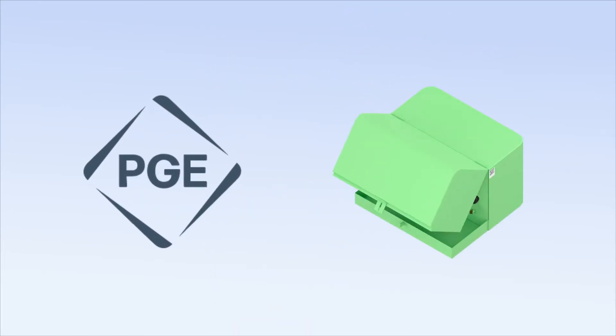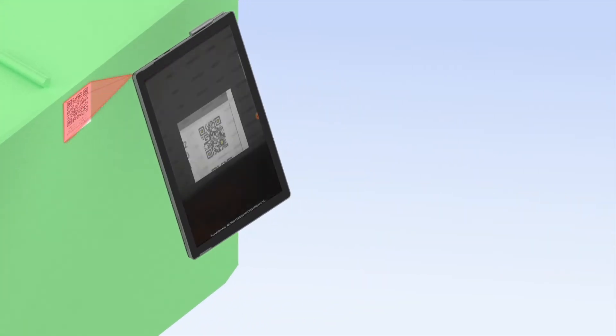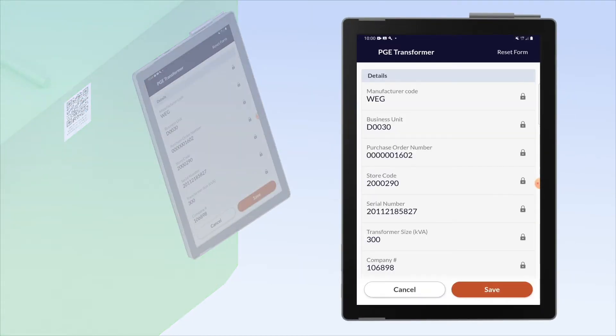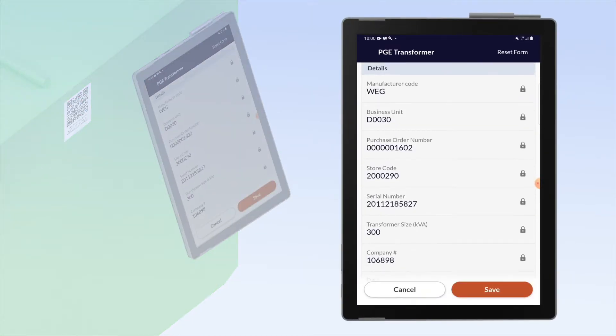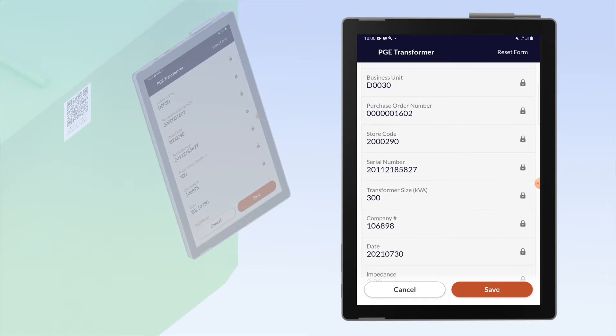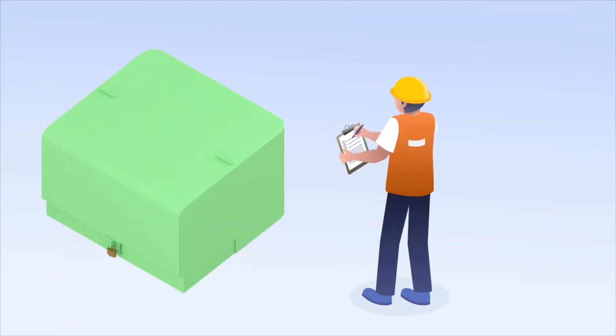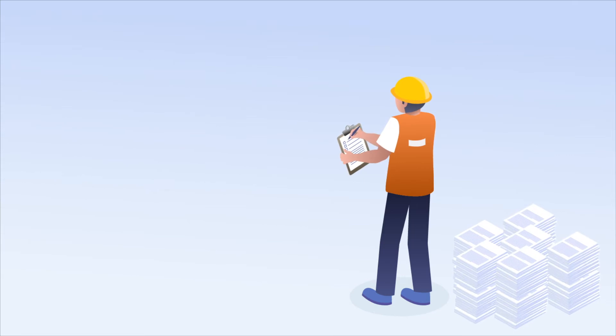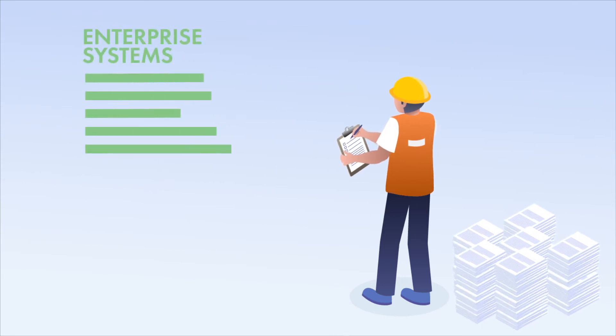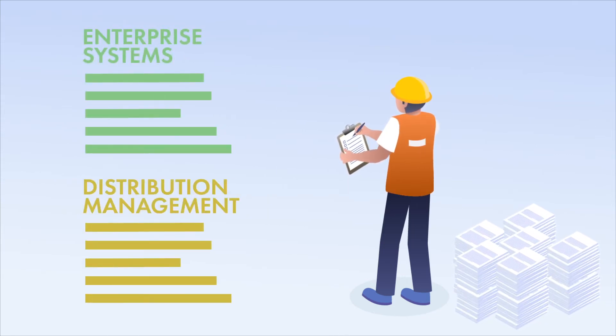At Portland General Electric, a demonstration was conducted to illustrate both the benefits and limitations of barcoding-based as-building of transformers. All electric utilities aim for accurate and timely capture of as-built information such as transformer numbers, which are essential to tie together enterprise systems for asset and distribution management.